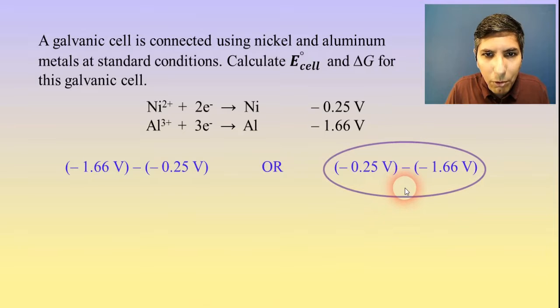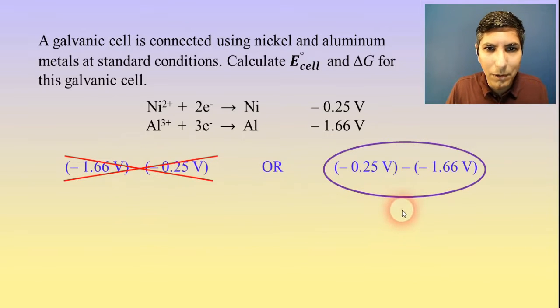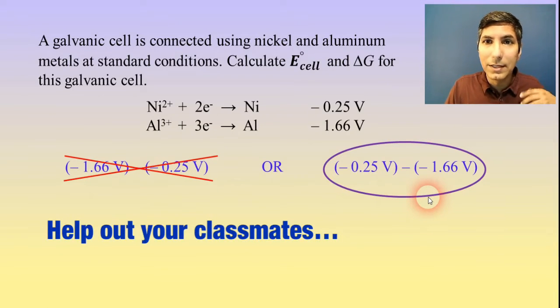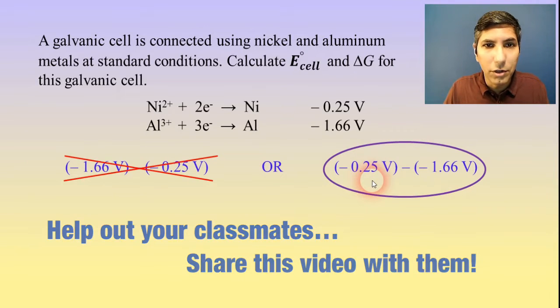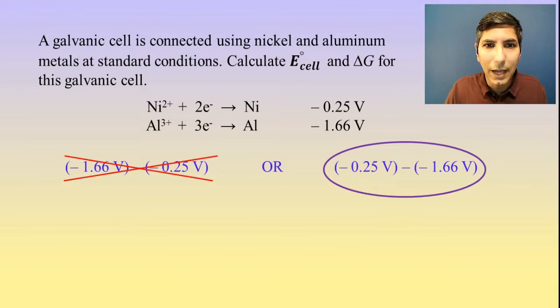Which of those two combinations is going to give us the positive value? It's this one over here. That one gives us a negative value, so that won't work. If the question asks which one is the cathode and which is the anode, we know the cathode is always in the first position. So nickel is our cathode, and the anode is in the second position, which is aluminum.